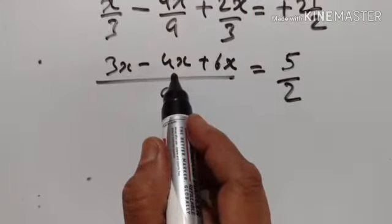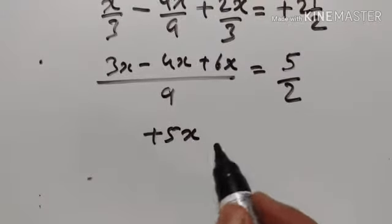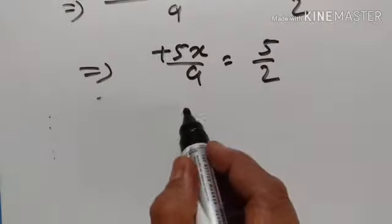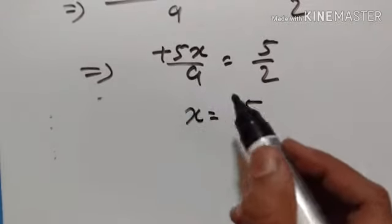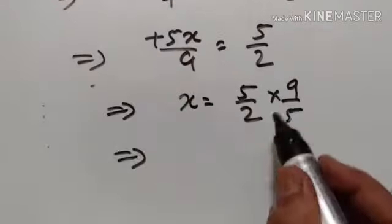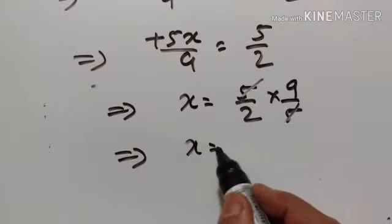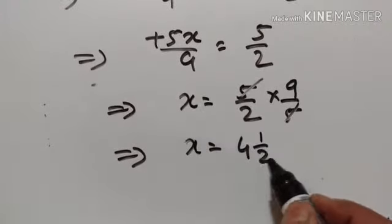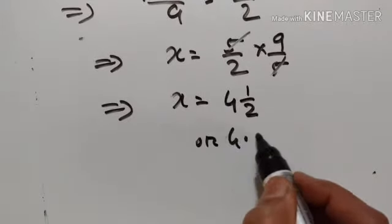3x minus 4x plus 6x upon 9 is equal to 5 upon 2. That gives x equal to 5 upon 2. So 5 upon 9 goes to the other side and becomes 9 upon 5. The 5s cancel, giving 9 upon 2. Therefore x is equal to 9 upon 2, which is 4 and 1 upon 2, or 4.5.